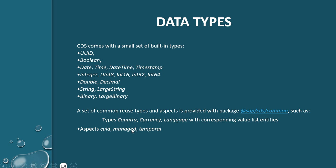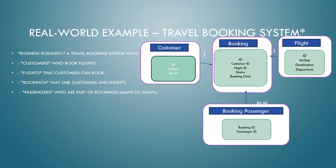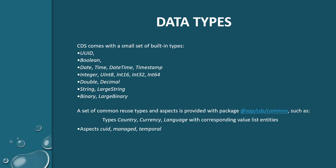There are also aspects like managed, temporal, and others. For example, if you use the managed aspect in your booking entity, it will track the complete details — date, time, departure date, and starting date — both generated automatically. These are the data types we are going to use.